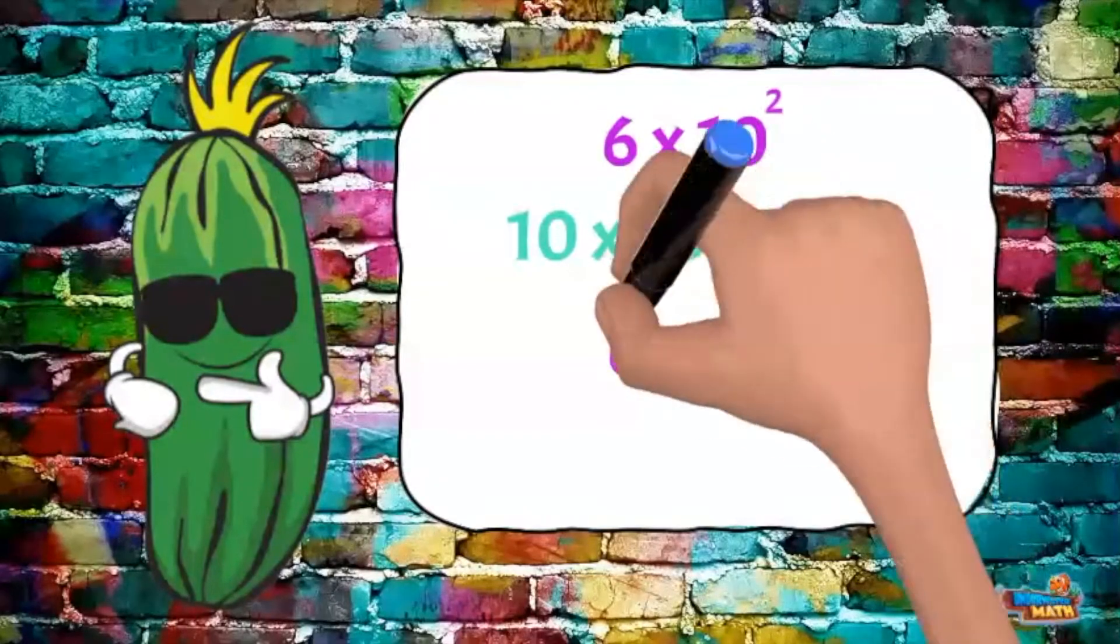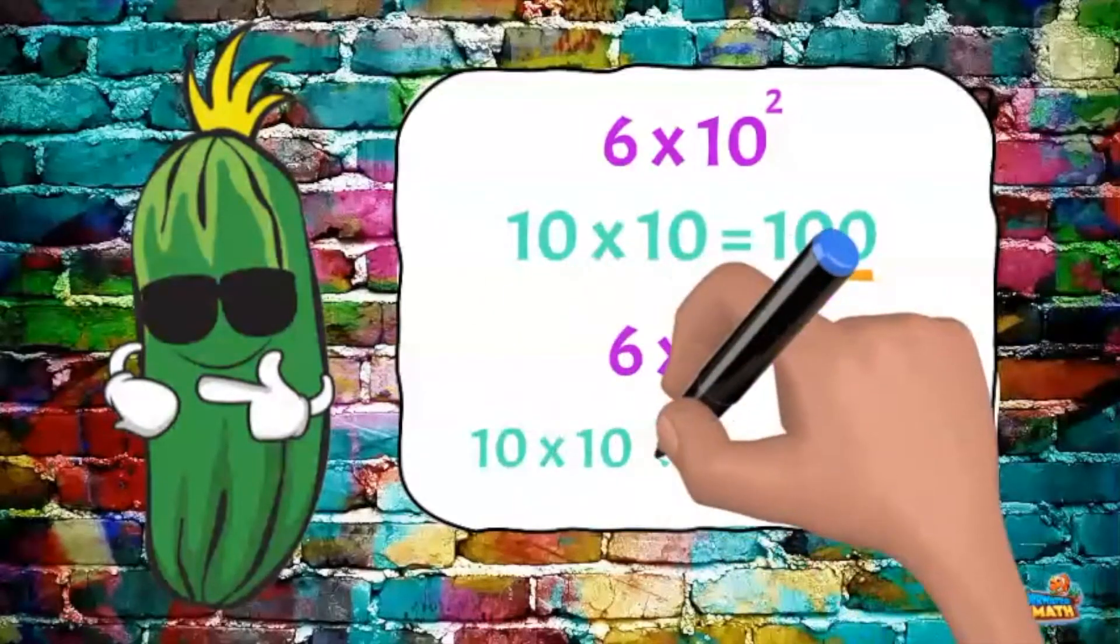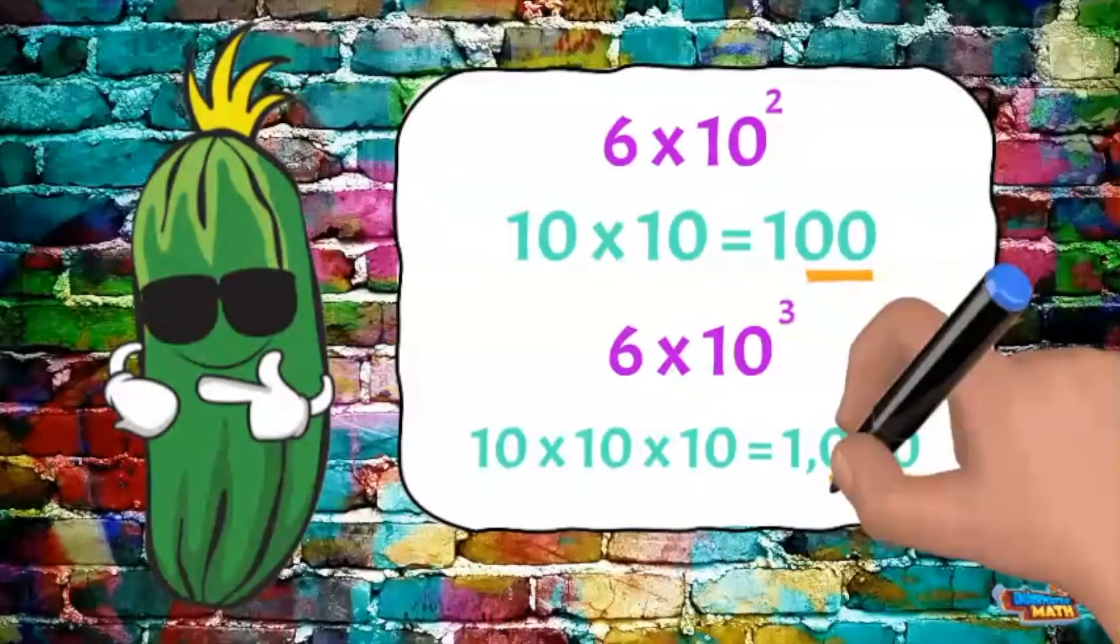10 times 10 times 10 equals 1,000. I'm sensing a pattern here. The exponent is 3 and there are 3 zeros behind the 1.